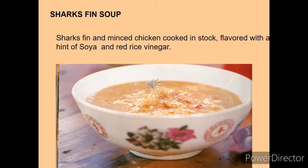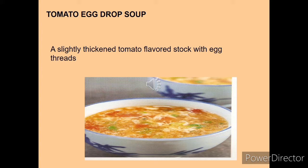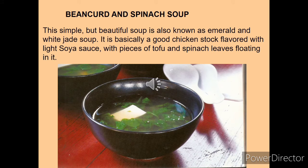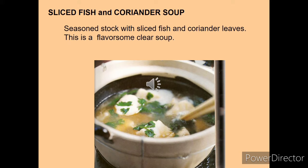Shark fin soup consists of shark fin and chicken cooked in stock, then flavored with soy sauce and vinegar. Tomato egg drop soup is a tomato-flavored stock in which egg white threads are poured at the last moment and whisked inside the soup. Bean curd and spinach soup is also available. In most Chinese cuisine they use different types of stock — chicken stock is the most preferred — and different food items are used in the stock to make different varieties of soup. Sliced fish and coriander soup is a seasoned clear stock with fish and coriander leaves.